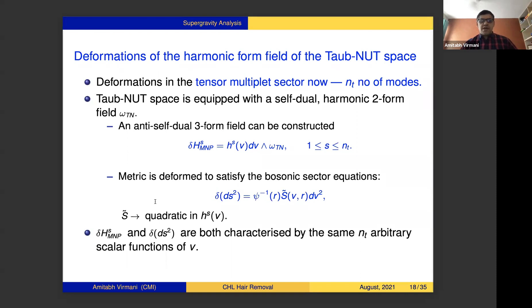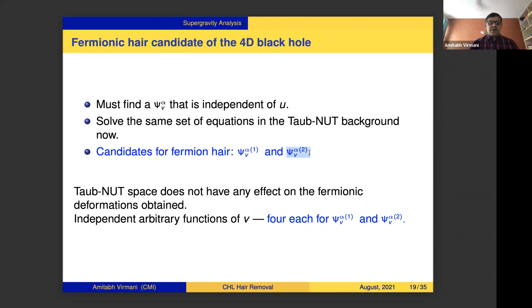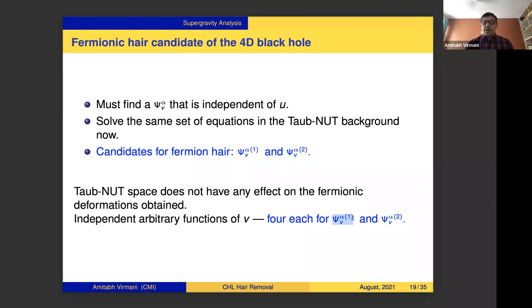The fermionic hair in the 4D case follows the same exercise as in 5D. Taub-NUT space has no effect on the fermionic deformation at all — the equations are identical. If you have done the 5D calculation, the 4D case is less than an hour of additional work. Again one finds four independent functions for each of ψ_1 and ψ_2.